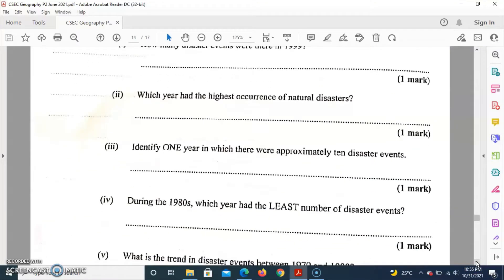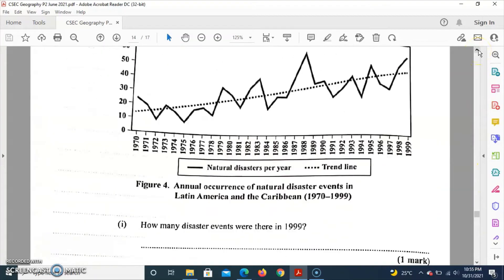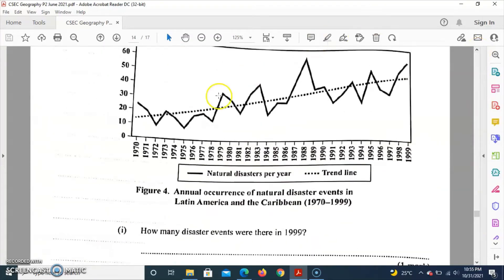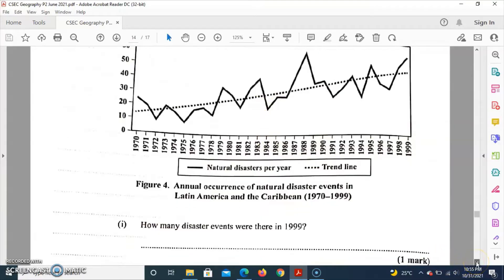So during the 1980s, which year had the least number of disasters? Between 1980 here and 1989, you'll realize that 1984 had the smallest amount of disaster. So the answer for that question is 1984.